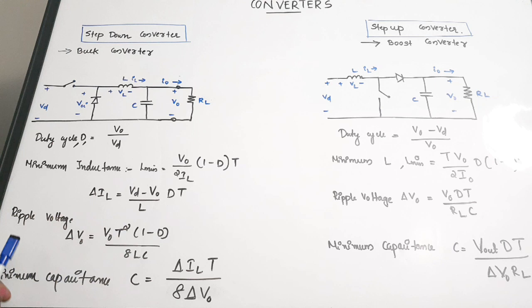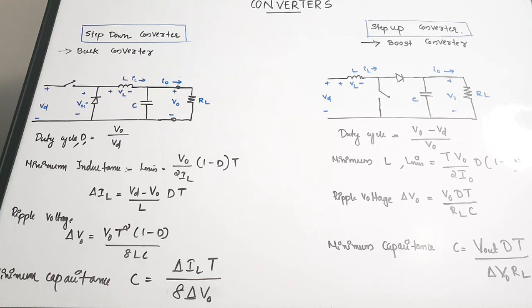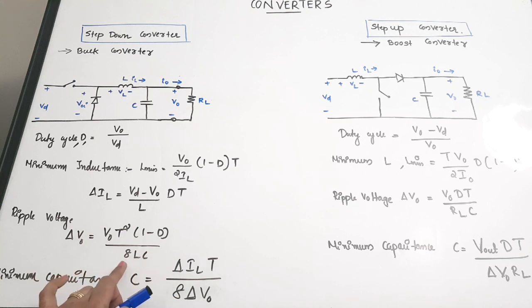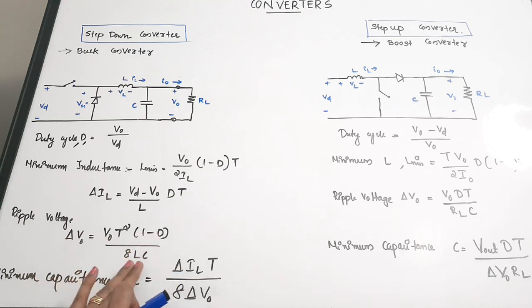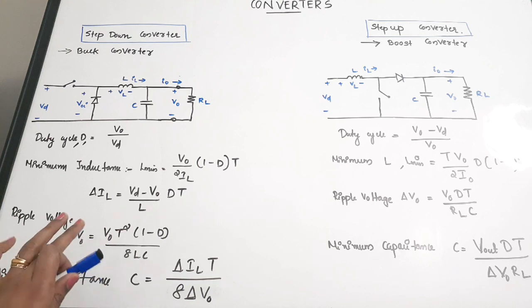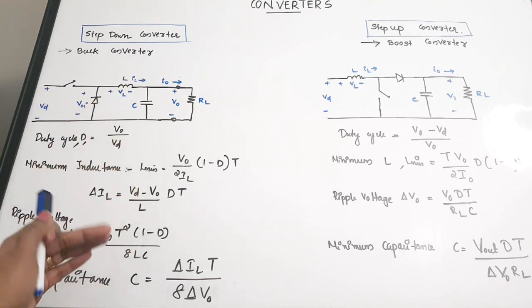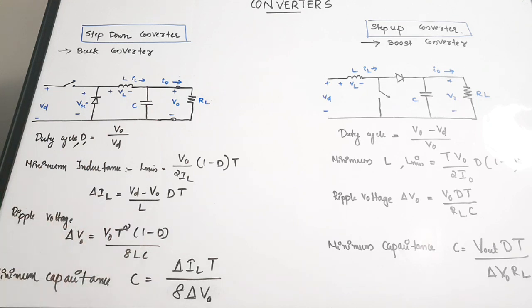The ripple voltage equation is: ΔVout = V0 × T² × (1 − D) / (8LC), where V0 is the output voltage, T is the time period, D is the duty cycle, L is the inductance, and C is the capacitance. This ripple voltage represents the undesirable ripples that appear in the DC output due to non-linearities in the circuit.